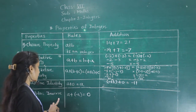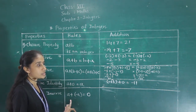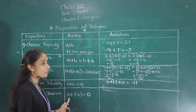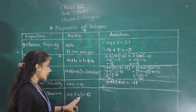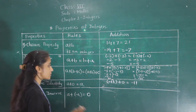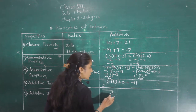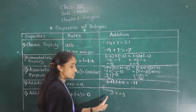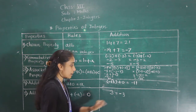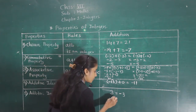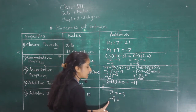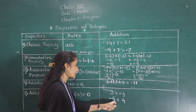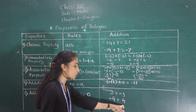Next property: additive inverse. The additive inverse of A is minus A. For example, the additive inverse of 3 is minus 3. The additive inverse of minus 4 is positive 4. The additive inverse of 100 is minus 100.